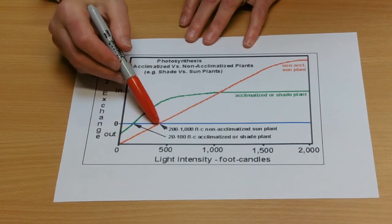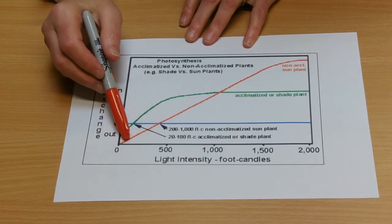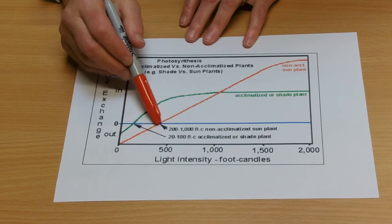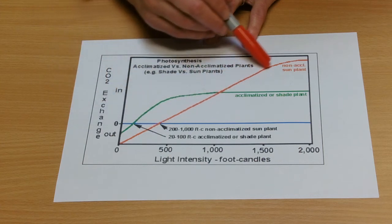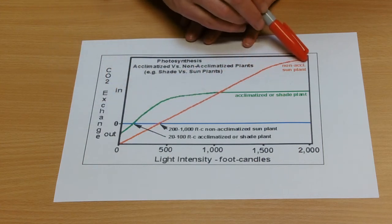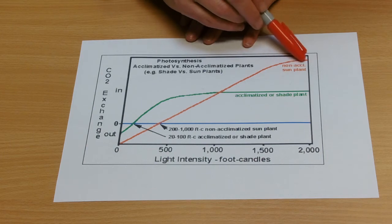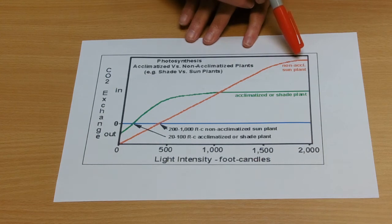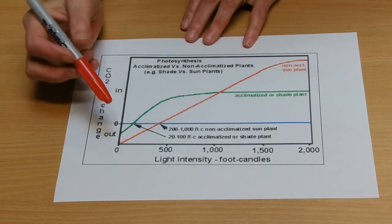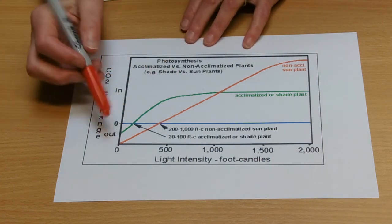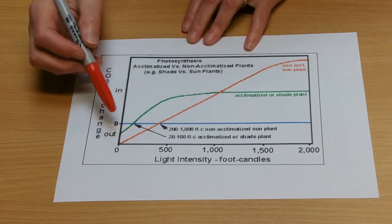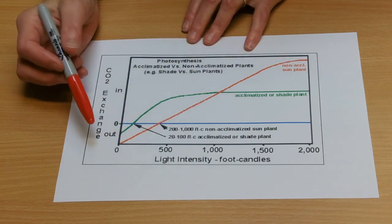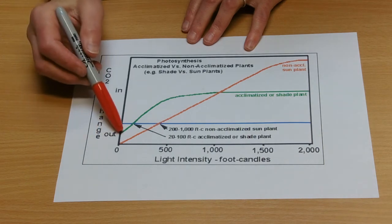Some plants then have really quite high compensation points, so that line will cross much earlier on. You can see that at the top it levels off, so there is a limit to how much light intensity can influence the rate of the light-dependent reactions and photosynthesis. It's part of Blackman's laws of limiting factors, you can read that up.